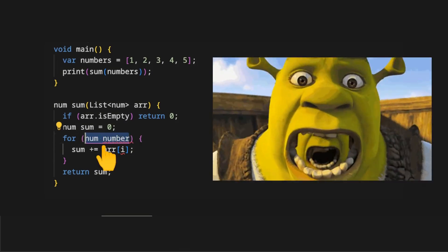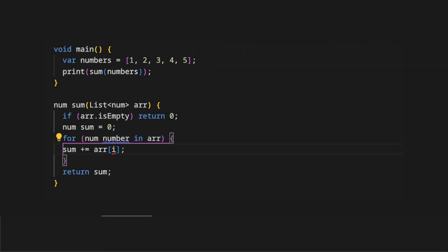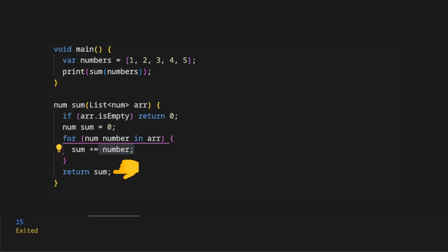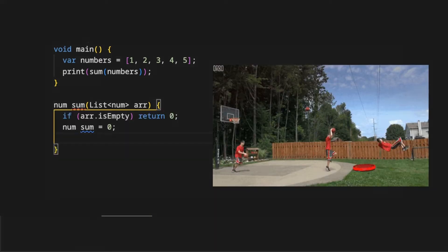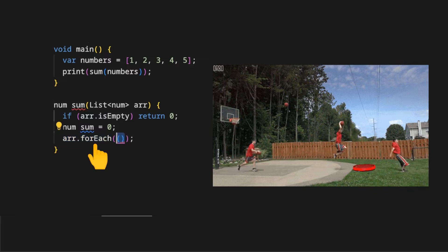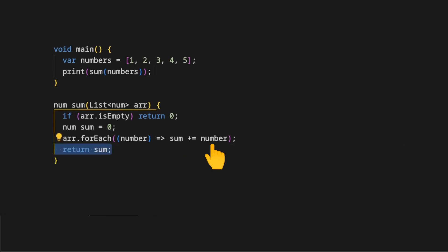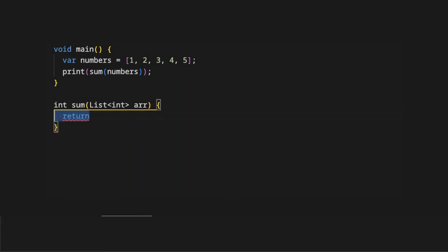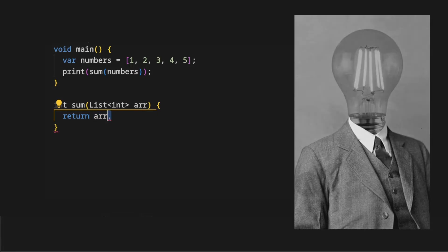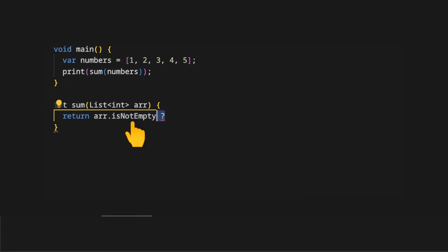Another approach is instead of using the standard for loop, we use the for-in loop. The sum is assigned by adding itself with the number variable that represents each element of the array. At the end of the method we return the sum variable. Another short approach is to use the forEach loop, where as a callback each element of the array is represented by number, and we assign sum by adding itself with number, then return the sum variable at the end.